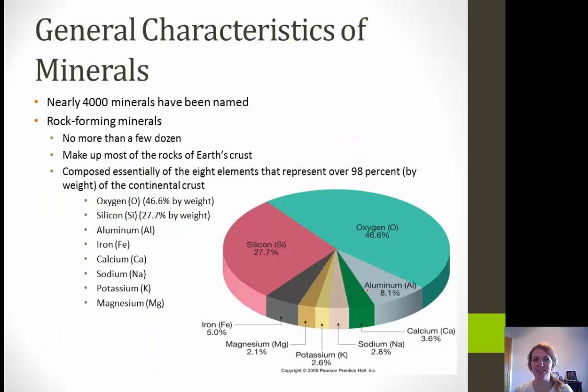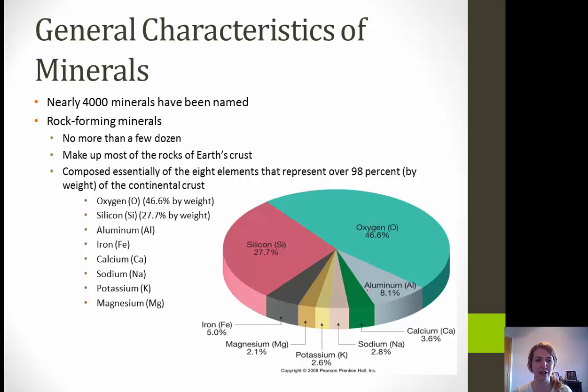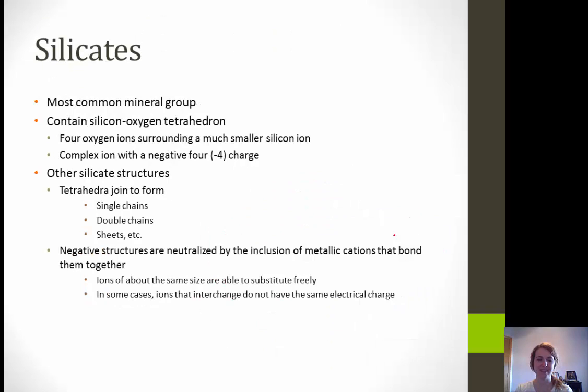Some general characteristics of minerals: there are nearly 4,000 different types of minerals that have been named. We have rock-forming minerals — no more than a few dozen — which make up most of the rocks of the Earth's crust. This is composed essentially of eight elements that represent over 98% by weight of the continental crust: oxygen, silicon, aluminum, iron, calcium, sodium, potassium, and magnesium.